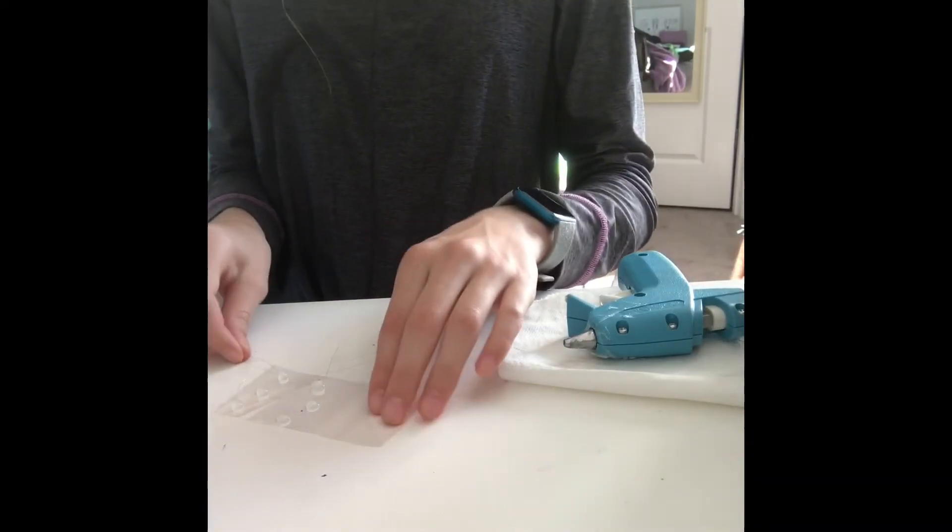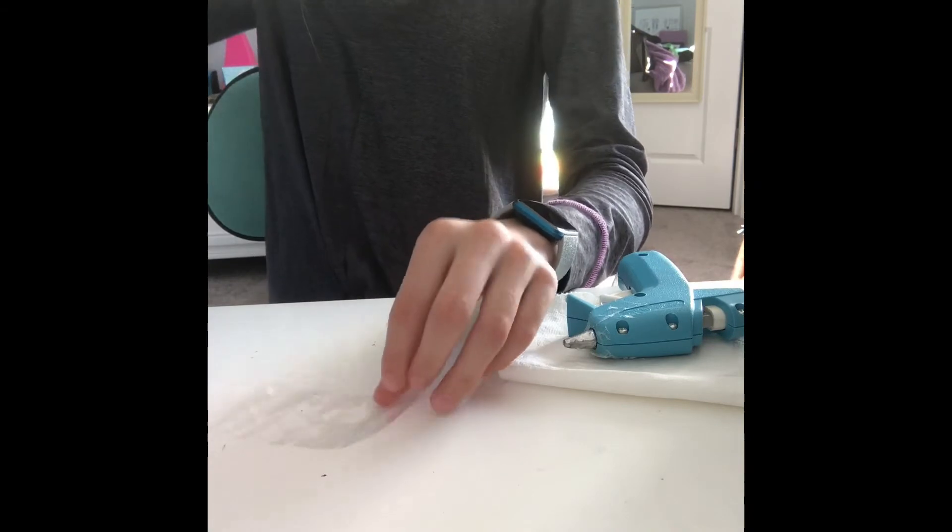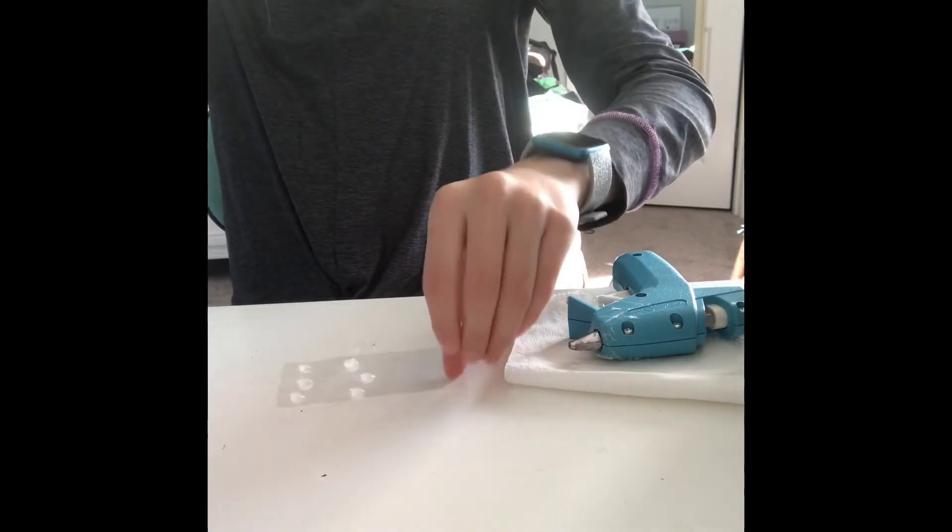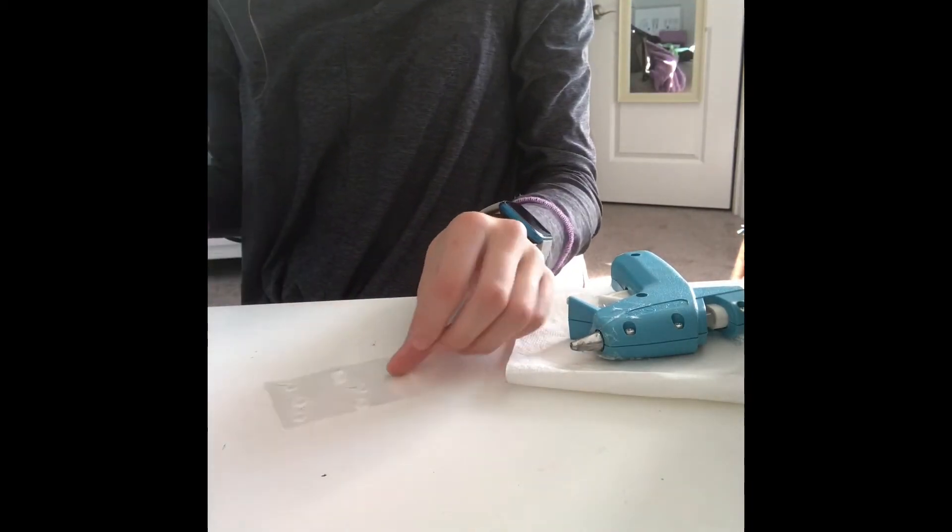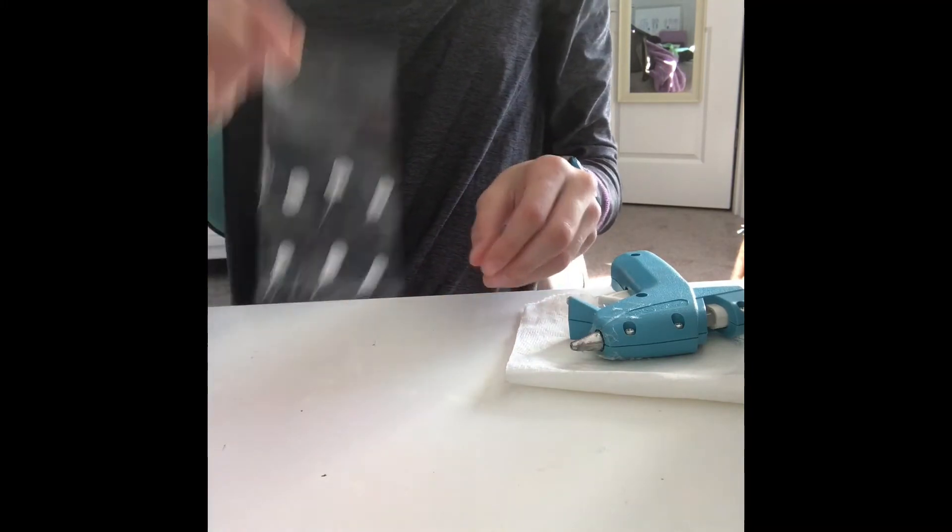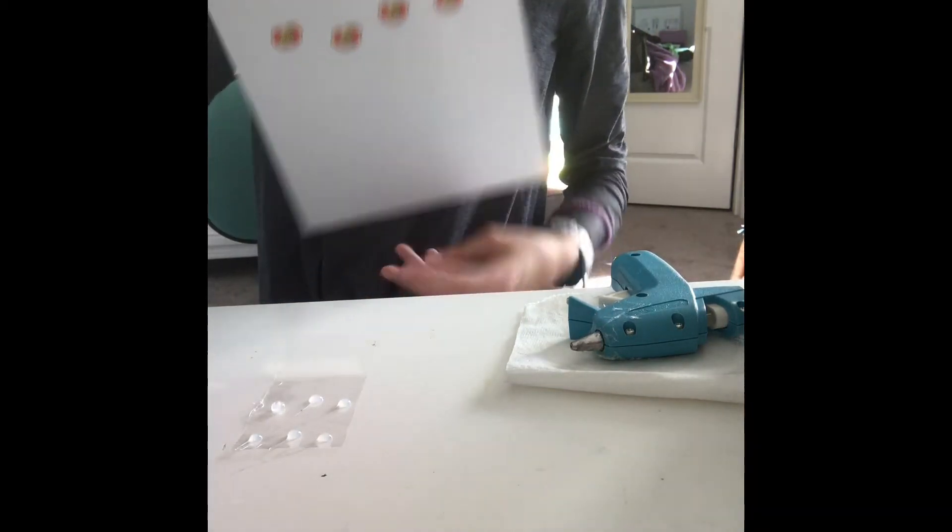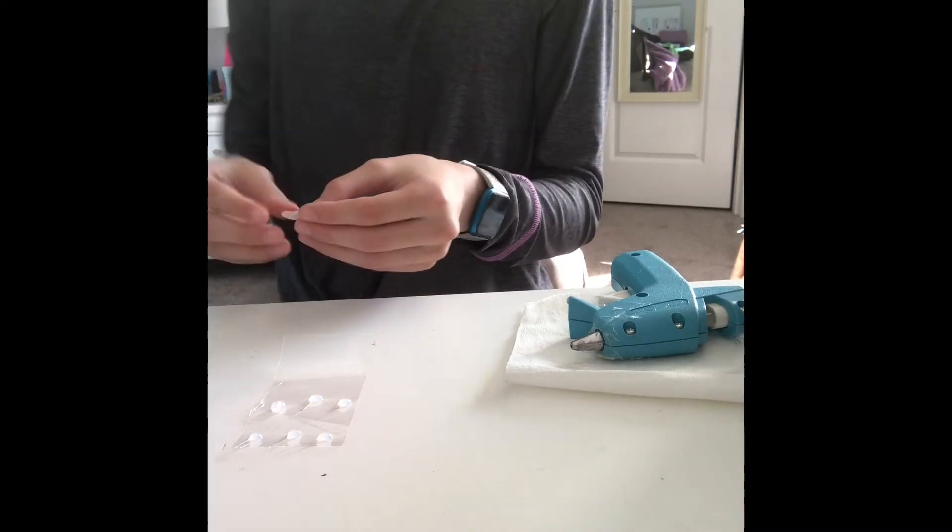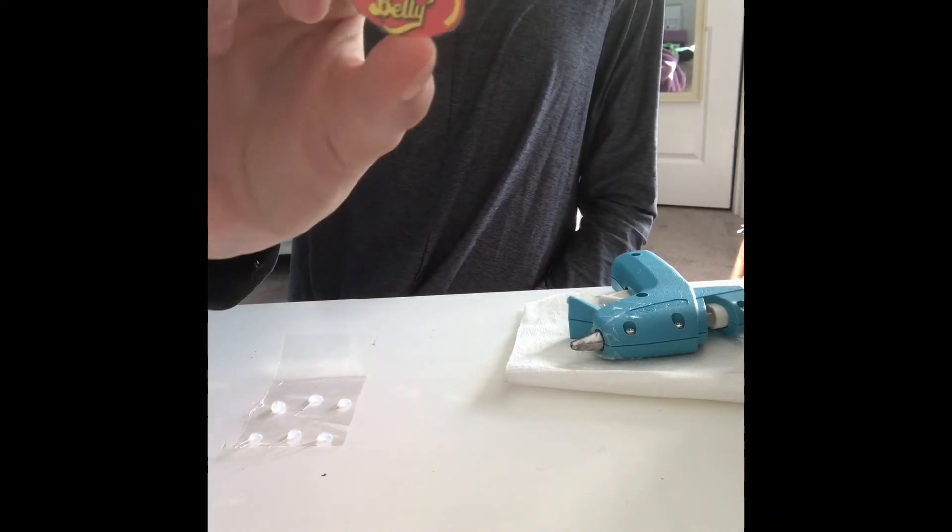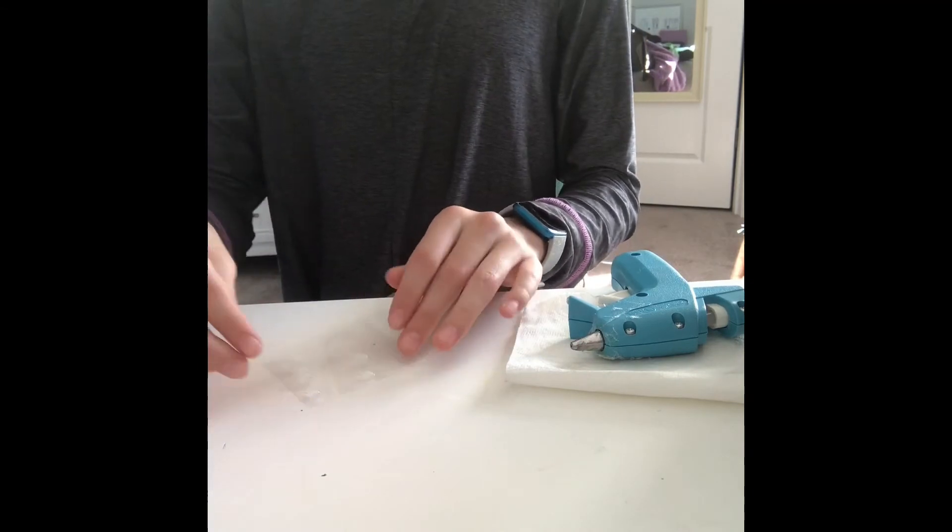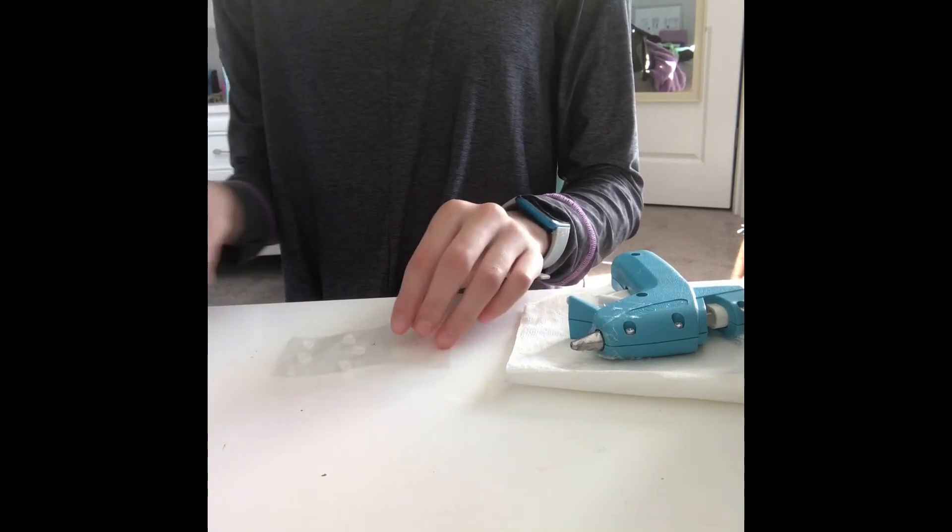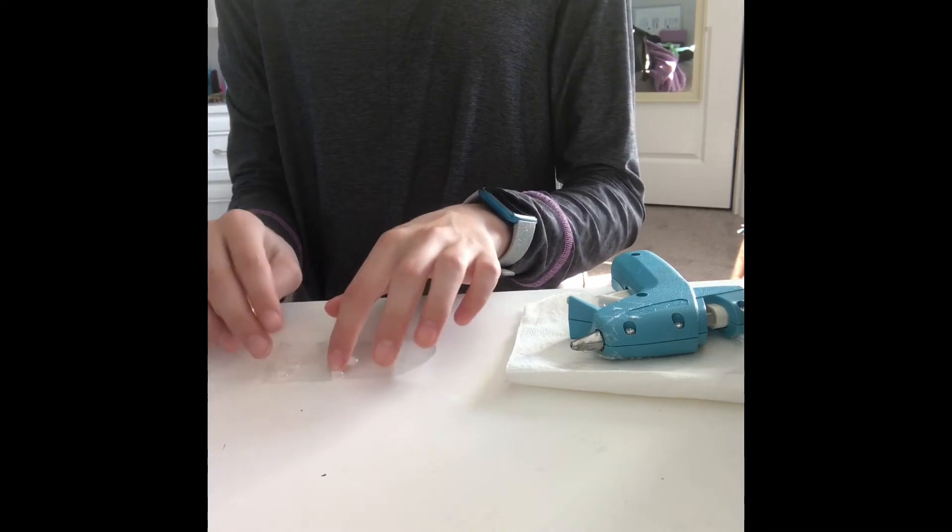Next thing you're going to do is print off a jelly bean logo. I will have it in the description of my video along with the bunny basket printable and the bunny outline if you want to use those. Once you have them all done, take your jelly bean logo, cut it out, and place it right side up on the sticky side where the jelly beans are, in the middle or wherever you'd like it.